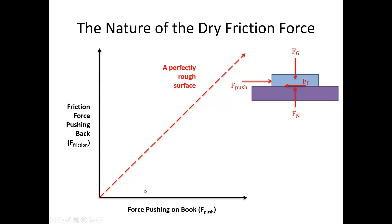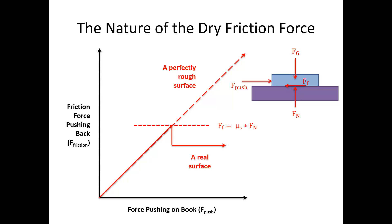On a real surface, if I increase the pushing force harder and harder, at some point I start moving the object and begin accelerating, meaning I have imbalanced forces. The friction force actually drops down and then, once the object is moving, maintains a constant friction force as it slides along the surface. We have two key points on this graph: mu static times Fn and mu kinetic times Fn.